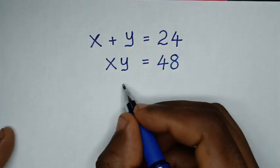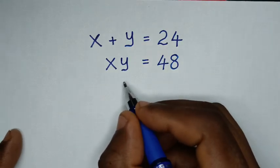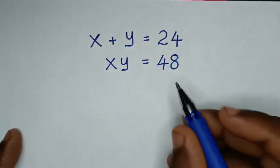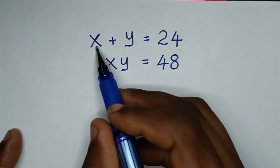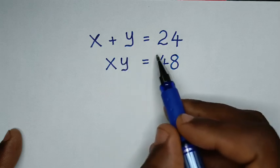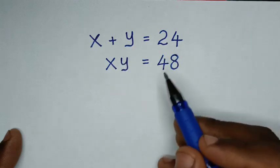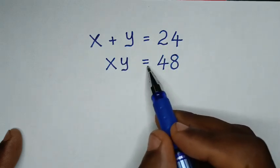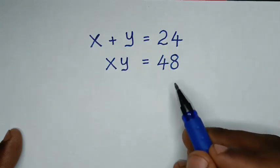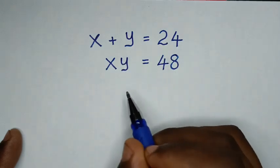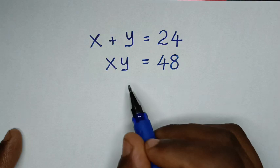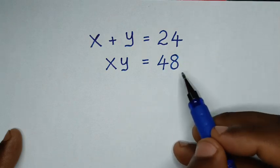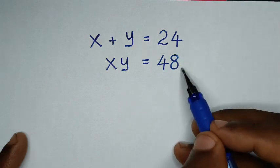Hello, you are welcome to solve this math problem which is x plus y is equal to 24, and xy is equal to 48, to find the values of x and y from these two systems of equations.